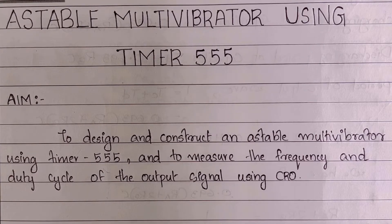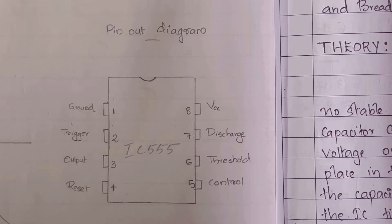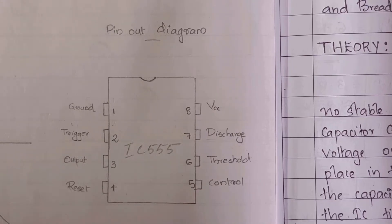Next we will look at the circuit diagram to generate a rectangular wave using IC 555. IC 555 timer is an essential part of electronic projects whether it is a simple circuit or a complex system. It provides time delays, functions as an oscillator, and as a flip-flop element. After its introduction in 1971, the 555 continues to be popular due to its low price and stability in use.